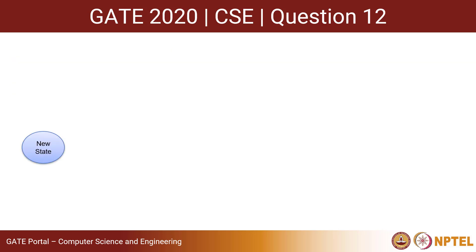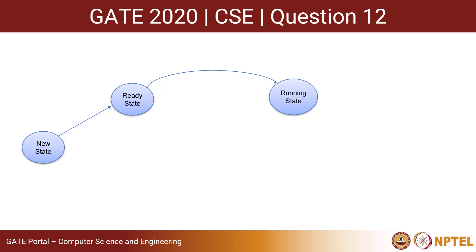The process is first created in the new state. Then the process is taken to the ready state, where more than one process can be present waiting to be executed. A scheduler picks one process from the ready state for execution and takes it to the running state. Only one process can be present in the running state, whereas more than one process can be present in the ready state.